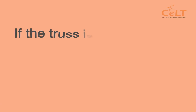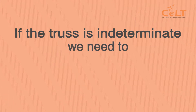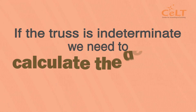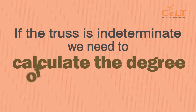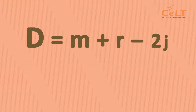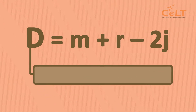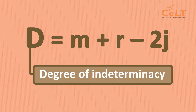If the truss is indeterminate, we need to calculate the degree of indeterminacy using the formula D equals M plus R minus 2J, where D is the degree of indeterminacy.